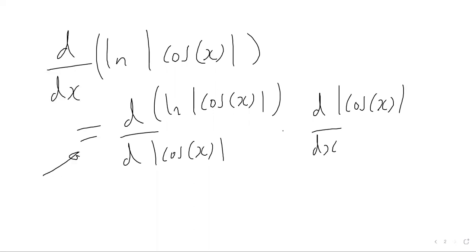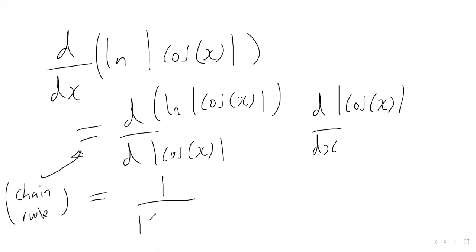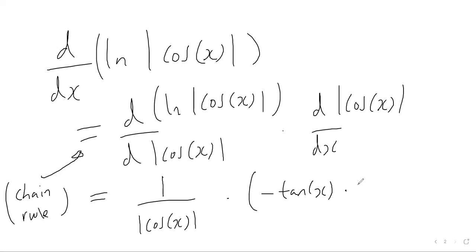This is just an application of the chain rule. The first derivative — when we differentiate the natural logarithm function of a variable with respect to that variable — gives us one over that variable. So this first part is just one over the modulus of cos of x. For the second derivative, we did this in the previous video: when we differentiated the modulus of cosine of x with respect to x, we got negative tan x multiplied by the modulus of cos x.